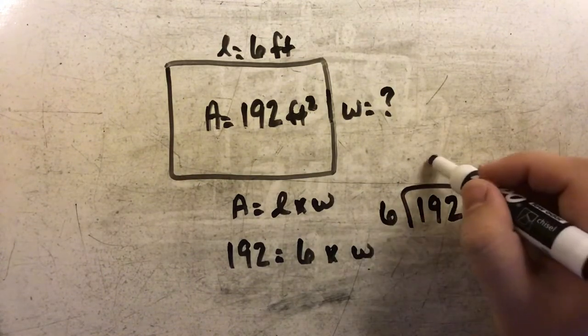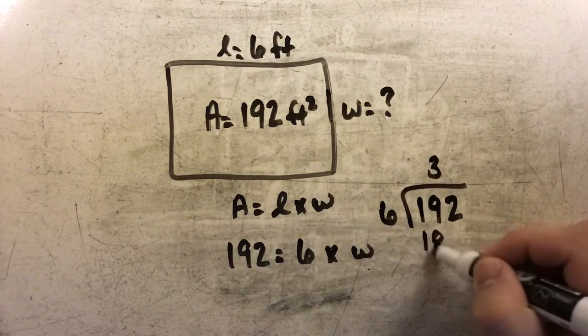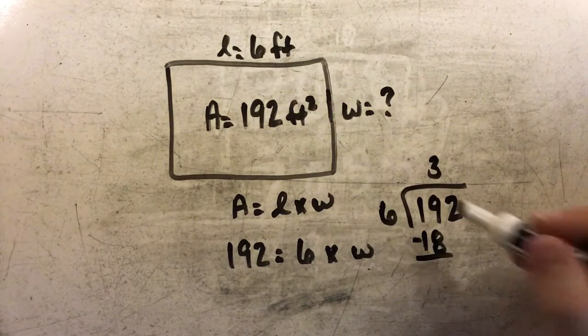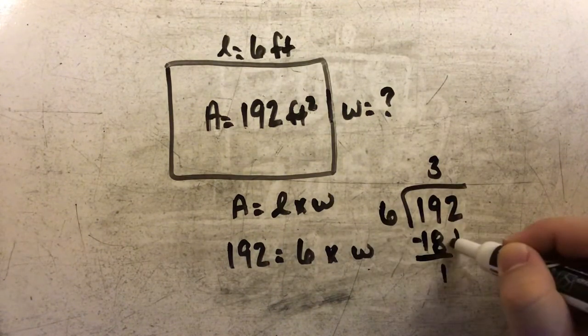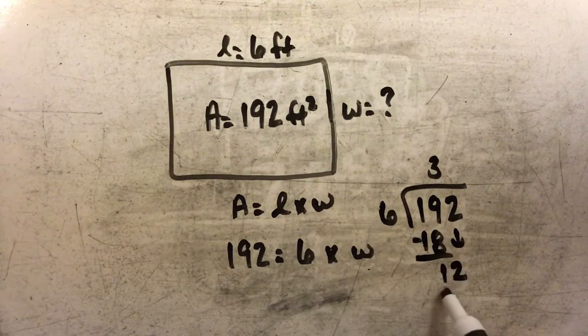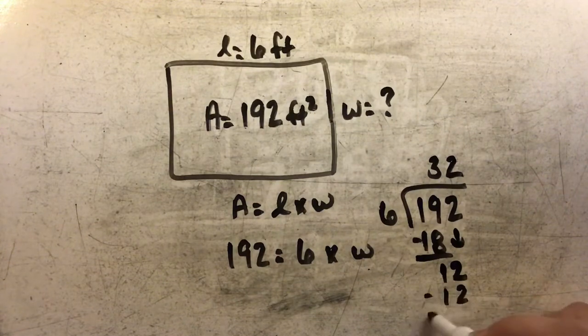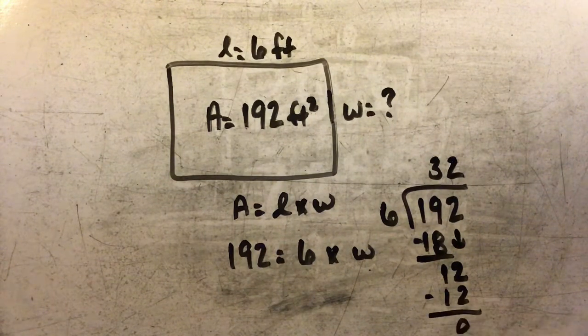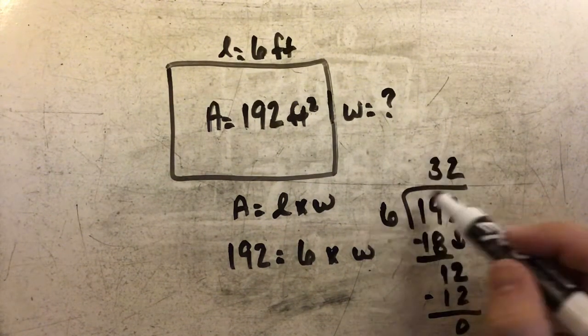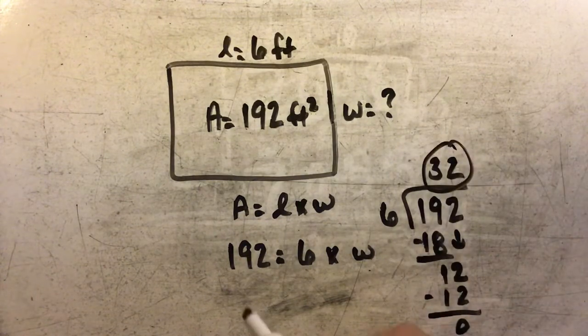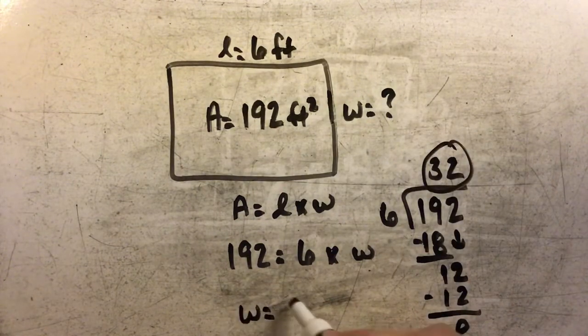6 goes into 19 three times. 3 times 6 is 18, and when I subtract, there's 1 left over. Bring down the 2. 6 goes into 12 two times. 2 times 6 is 12 with nothing left over. So my missing side length is 32 feet.